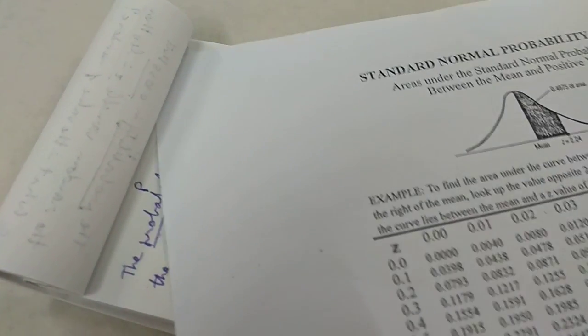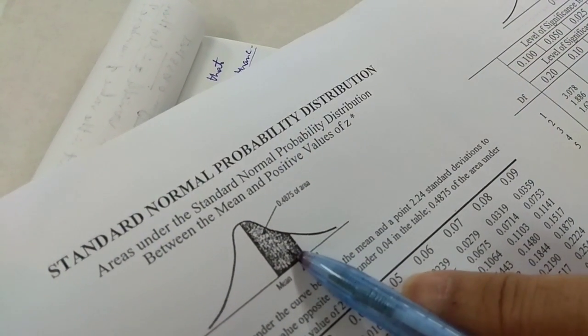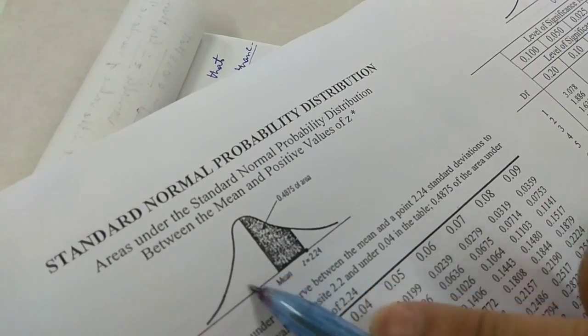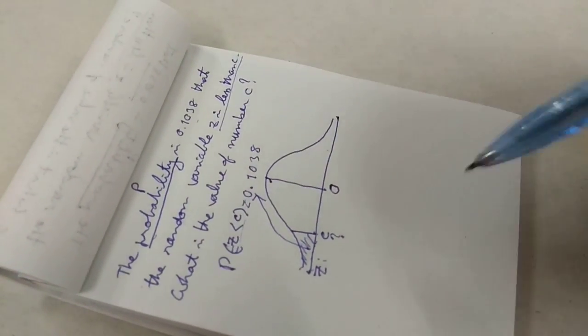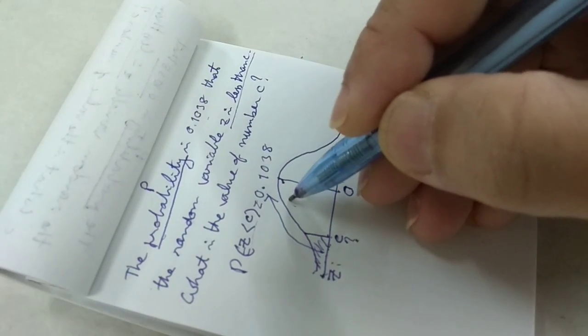According to our table, we must know this area. This area and the area on the left are the same. So we need the middle area. What is this area?